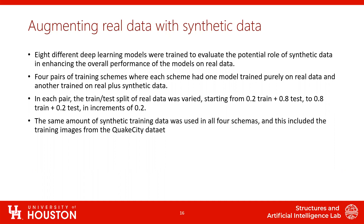In total, we had 150 high-resolution images taken in Mexico City that we annotated. Those 150 images were split in different ratios: 20% for training and 80% for testing, 40% training and 60% testing, 60% training and 40% testing, and 80% training and 20% testing. Those are the four schemes. For each scheme, we added synthetic data, giving eight models total. The same amount of synthetic training data was used in all four schemes, including training images from the QuakeCity dataset.